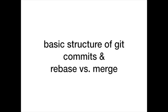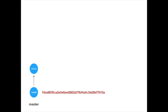Let's continue with the basic structure of Git commits and differences between the rebase and merge commands. A Git repository consists of commits. Every commit has a revision number — it's very long, so the first six characters are usually enough. The revision number is like a hash. Git compares revision numbers to check if two commits are the same or not.